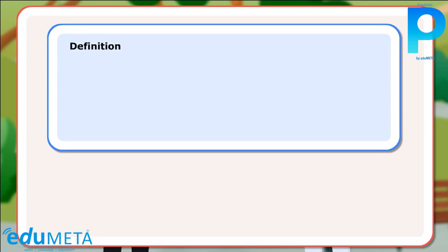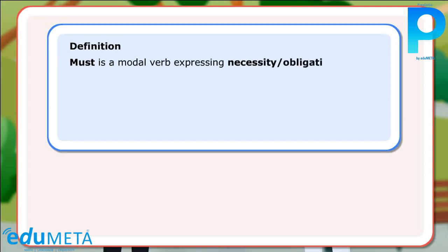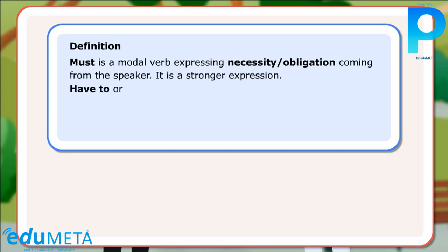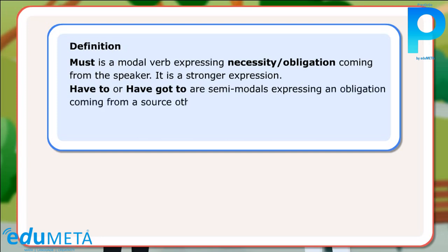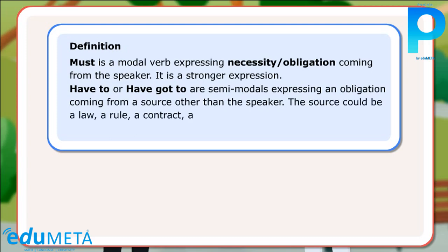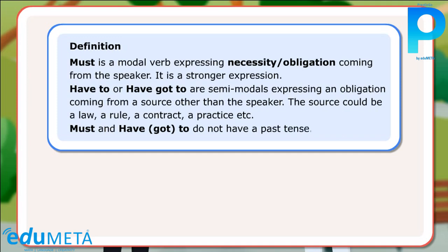Definition: Must is a modal verb expressing necessity or obligation coming from the speaker — it is a stronger expression. Have to or have got to are semi-modals expressing an obligation coming from a source other than the speaker; the source could be a law, a rule, a contract, a practice, etc. Must and have got to do not have a past tense.